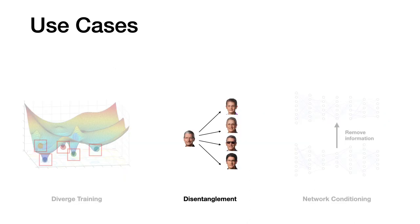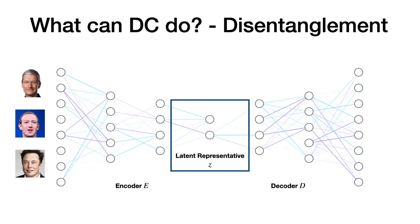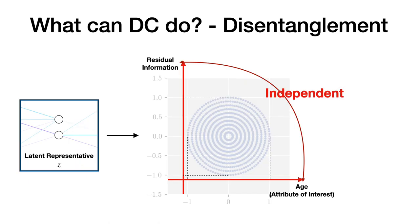Let's consider another use case, disentanglement in the latent space. For the encoder-decoder model, we can encode the input images into the latent space. And in the latent space, we can ask that one node representing the attribute of interest, like age, and another node representing the residual information should be independent. This is called disentanglement. You will see immediately that we can use distance correlation to measure the independency.